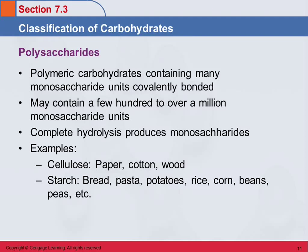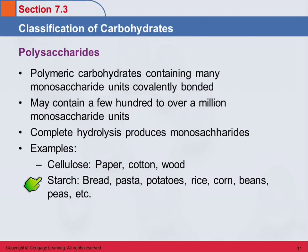Polysaccharides are polymeric carbohydrates with many monosaccharide units — more than ten, and it's not uncommon for them to be in the hundreds to over a million monosaccharide units. If you completely hydrolyze them, you'll get monosaccharides. Examples include cellulose, which is found in paper, cotton, and wood — the hard structure of a tree is due to polysaccharides. Starch is another example, found in starchy foods like bread, pasta, potatoes, rice, corn, beans, and peas. The difference between these polysaccharides is how the monosaccharides are hooked together.